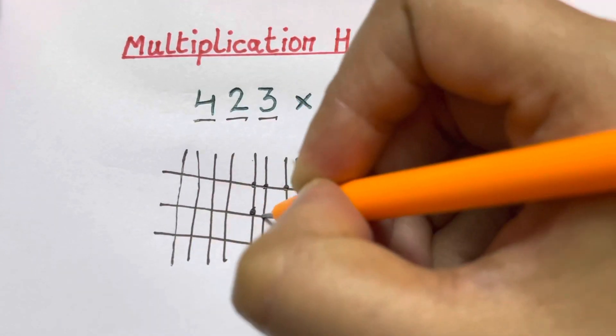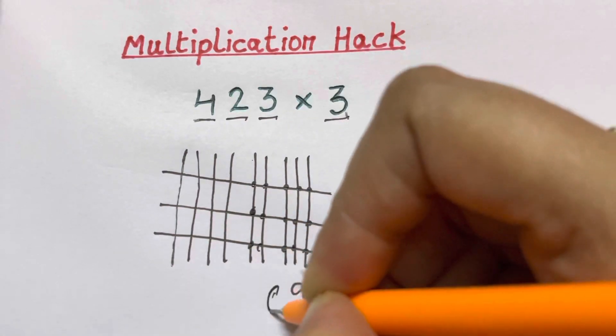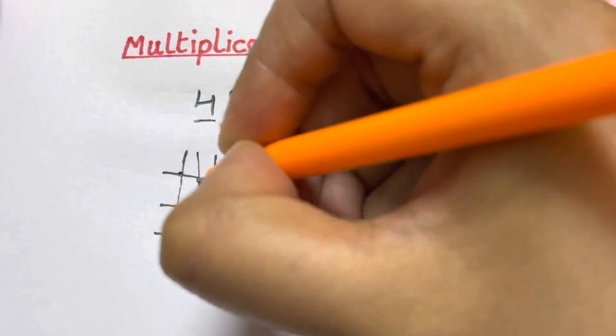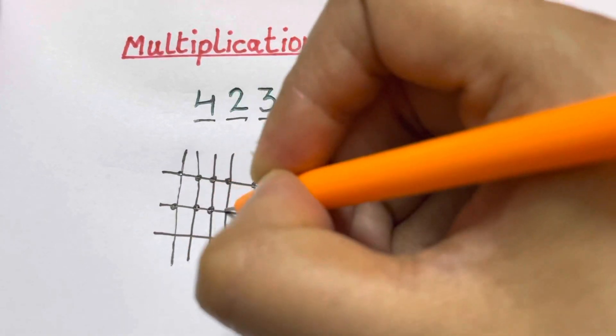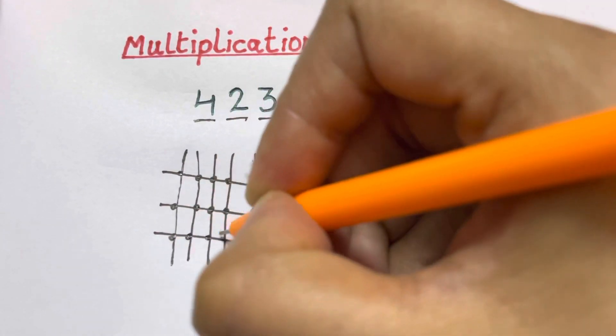Now here 1, 2, 3, 4, 5, 6. Total of 6 dots. And here 1, 2, 3, 4, 5, 6, 7, 8, 9, 10, 11, 12.